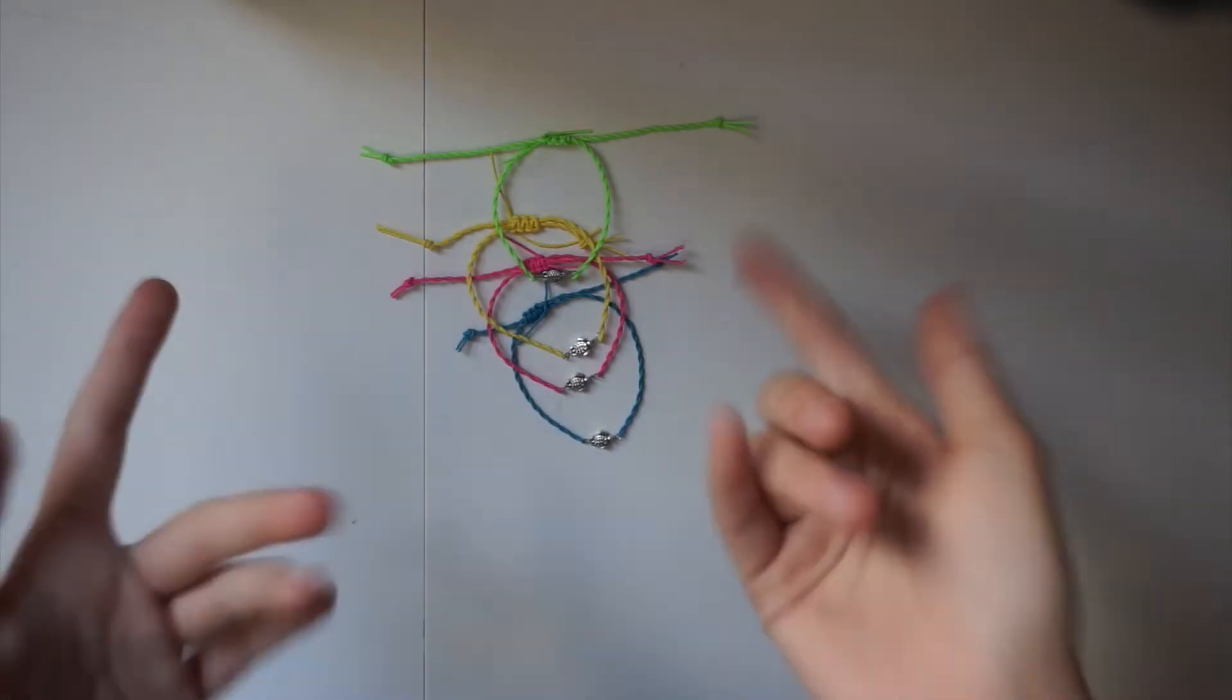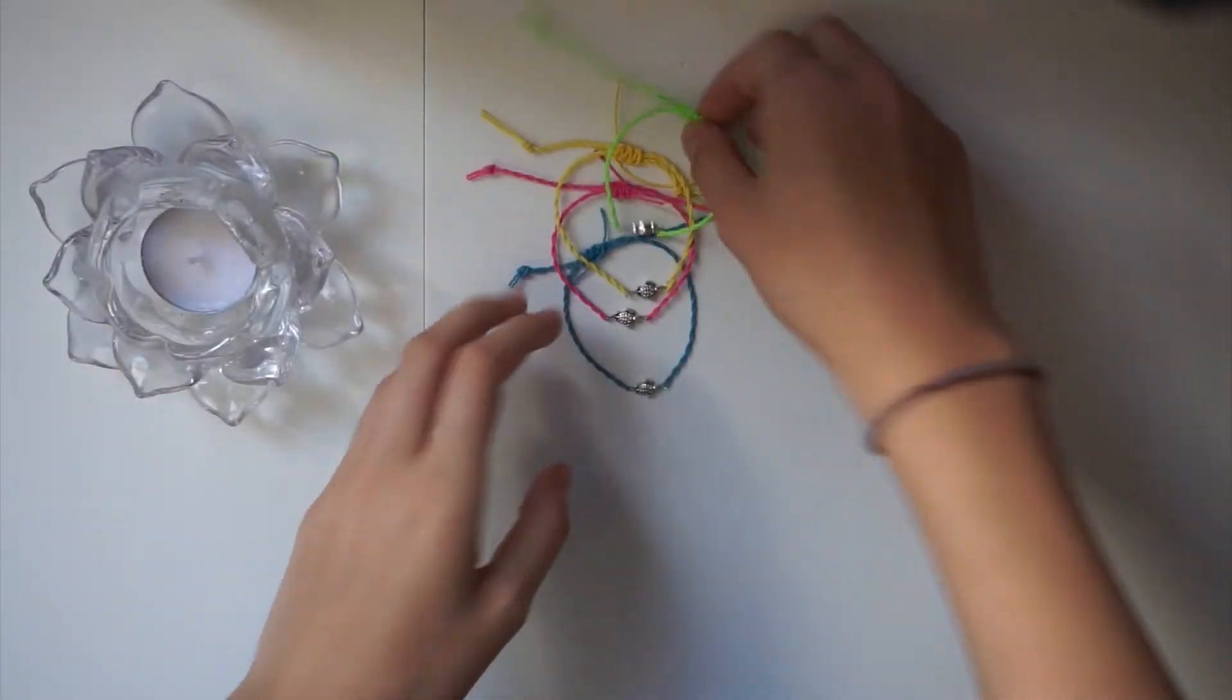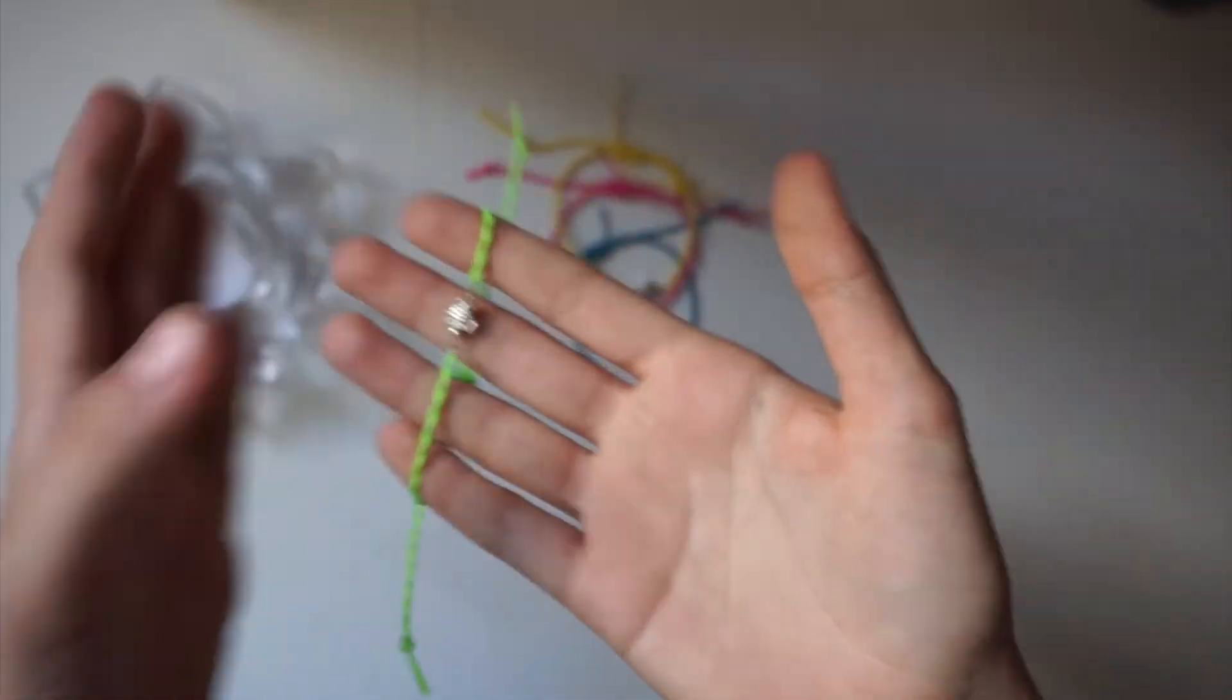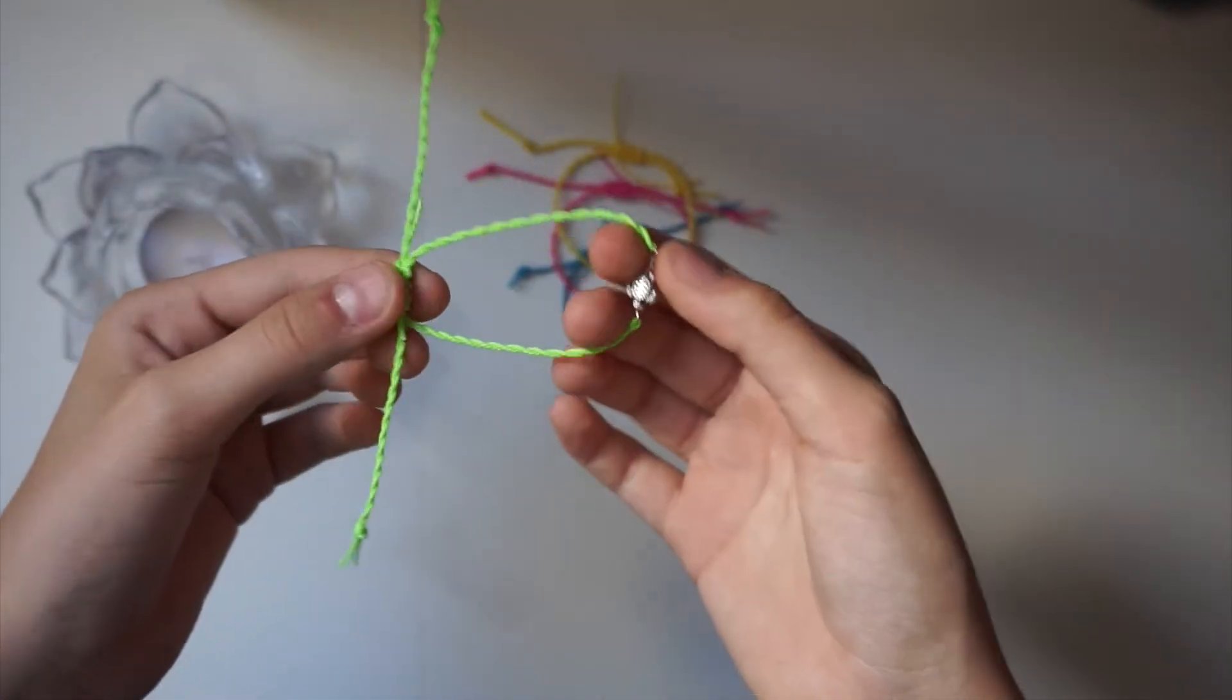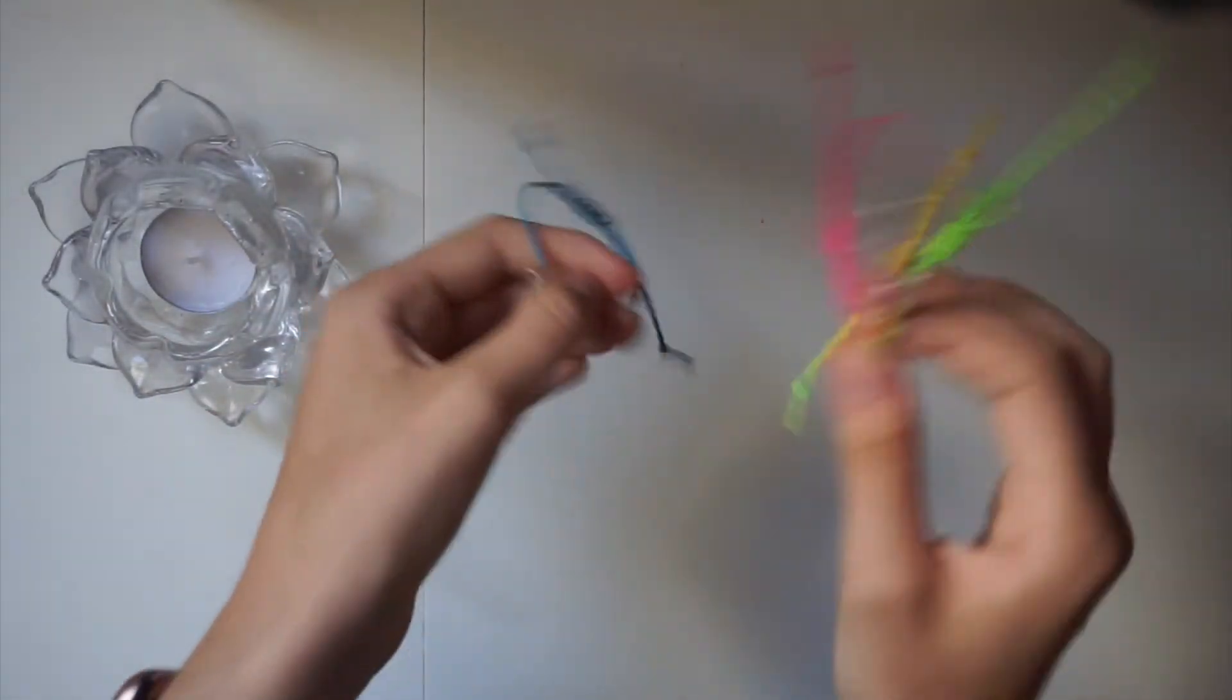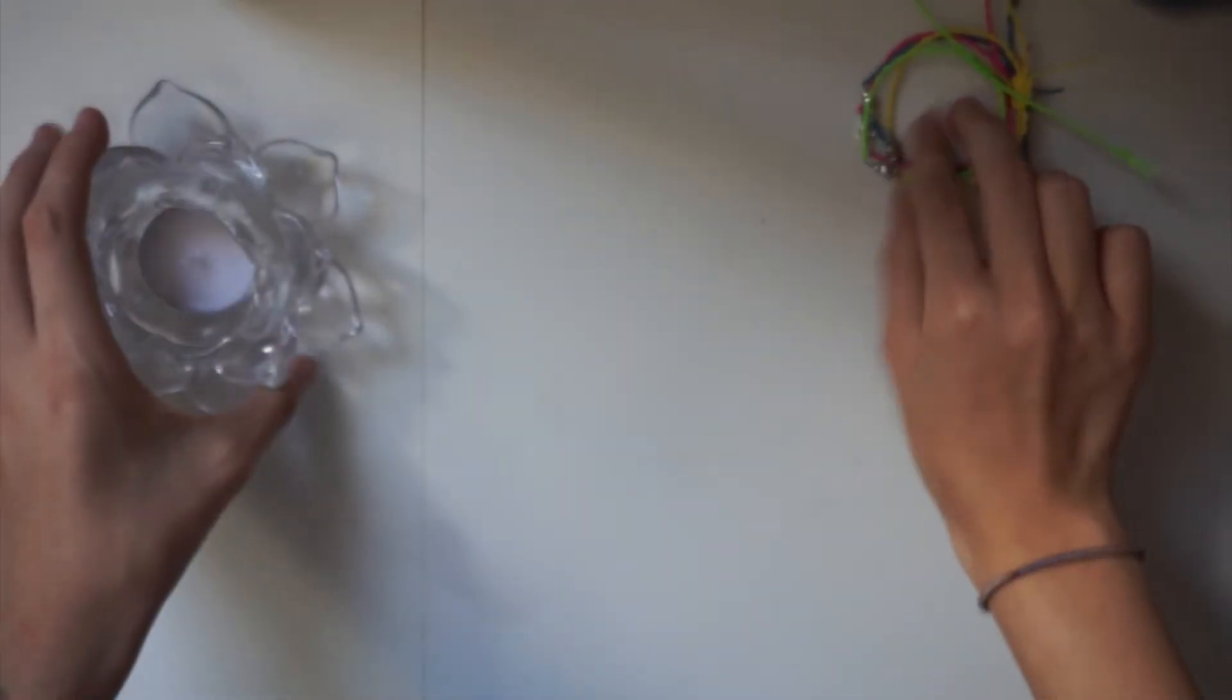So the materials you're going to be needing for today's project is the bracelets that you can either have any other kind, and these are my turtle bracelets which are for sale on my Etsy if you want to go purchase one. Or if you want to make one, I posted a tutorial for them last week. I will leave that link in the description. And so I just have four that I'm going to do because I have to melt them all.